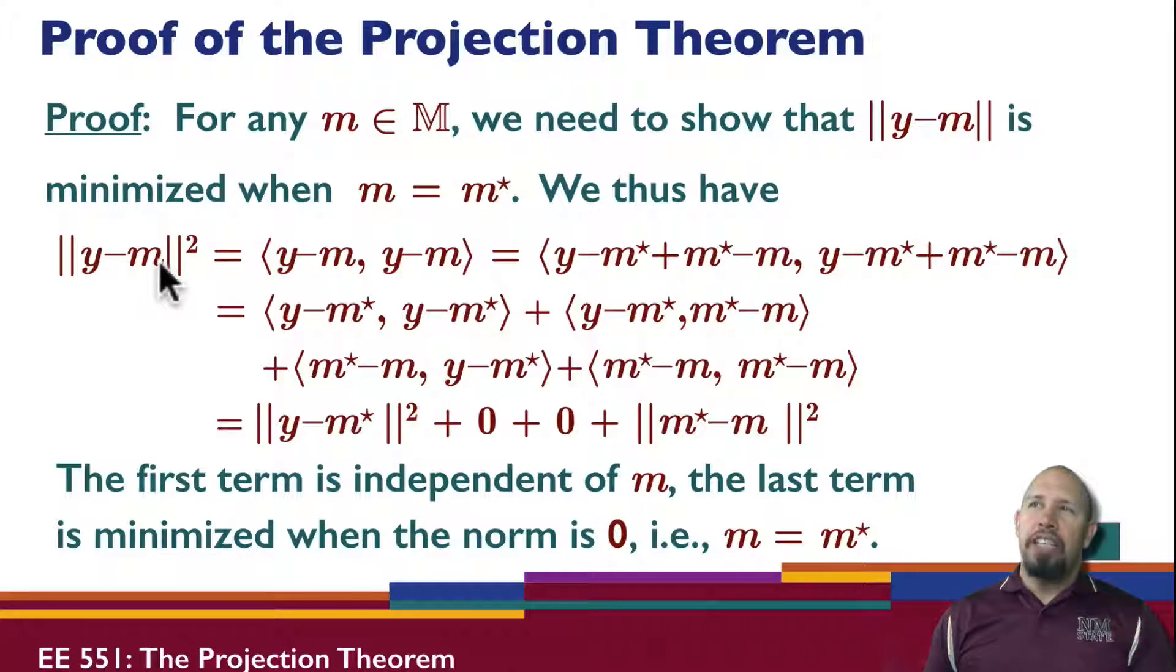Here, y minus m, norm squared, we can take as the inner product of y minus m with itself. We've made the assumption that there is a norm defined and an inner product, so this norm is an induced norm associated with this inner product.